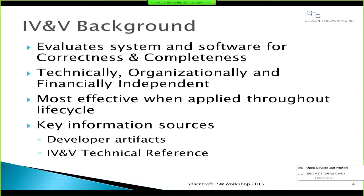Independent verification and validation is a systems engineering discipline. Its objective is to ensure that systems and software are correct and complete, along with many other quality attributes. The IV&V team is technically, organizationally, and financially independent of the development team — that's the independence part. The development team typically focuses on what is required to make the system and software succeed, whereas IV&V tends to focus on what can cause the system to fail. That's the difference in perspective.